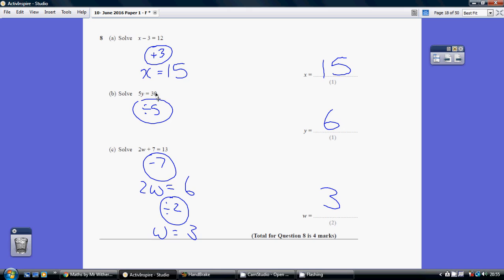Part B, 5Y are 30. Well, 5, 6 is 30. Or equally, if you want to break it down, how do you undo a times 5? We divide by 5. 30 divided by 5 is 6.